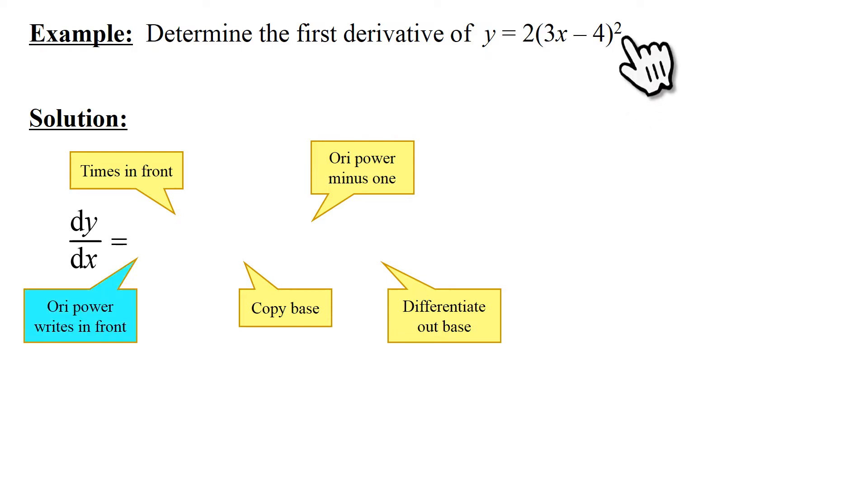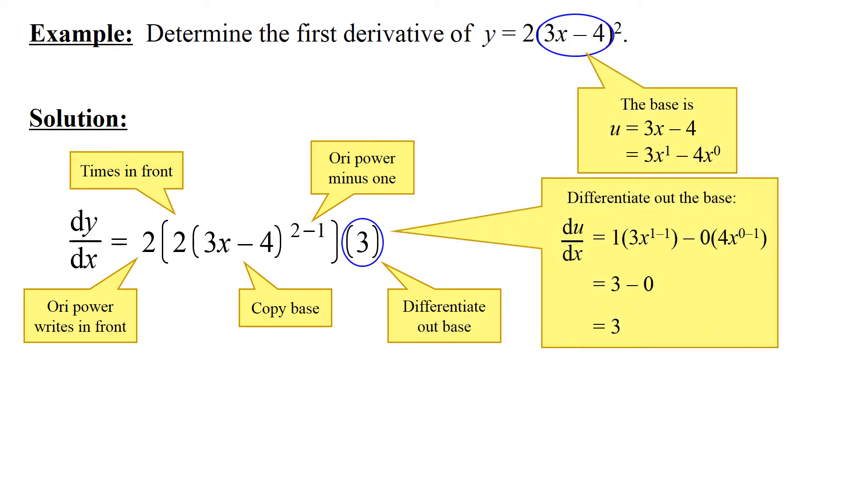Ori power writes in front, times in front, copy base. Ori power minus one, differentiate out base. So, there is only one extra step here, to differentiate out the base and append it to the differentiation of the outer function as a coefficient or a factor.